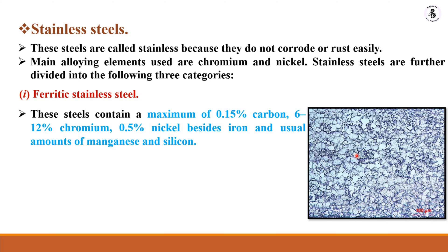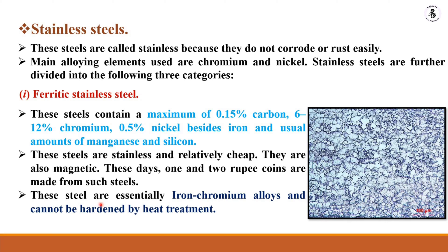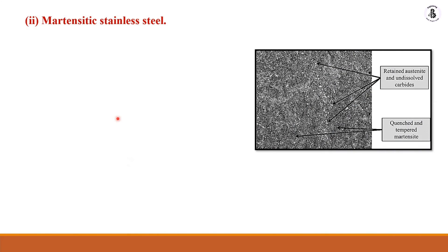This is the ferritic structure of stainless steel. You can observe a 100 micrometer structure here — ferritic steel has shiny surfaces and ferrite is present in the form of a white structure. These stainless steels are relatively cheaper than other types and are magnetic in nature. One and two rupee coins are made from such steel materials and they never corrode. These steels are essentially iron-chromium alloys and cannot be hardened by any heat treatment process.